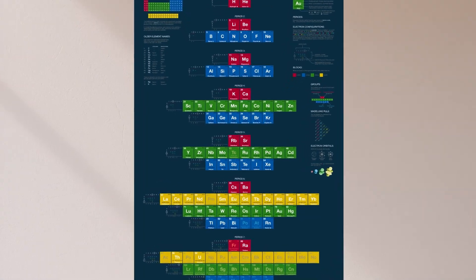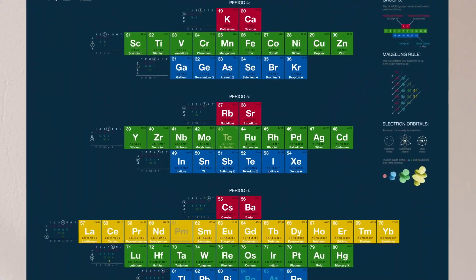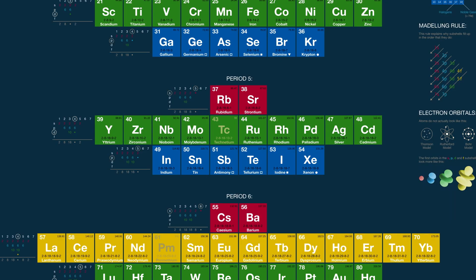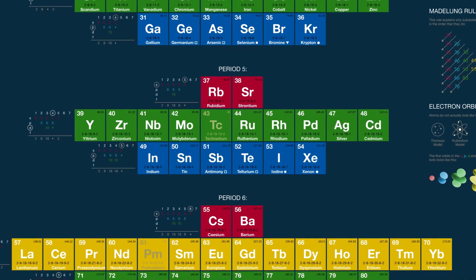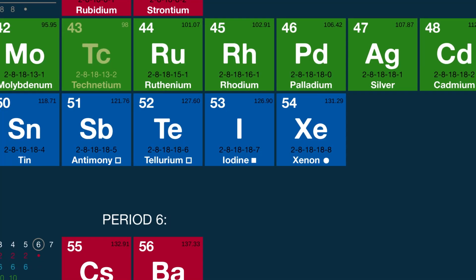If we zoom in, we can see that there's lots of other information listed. For each element, you have its name, number, and symbol, as well as its atomic weight and electron arrangement. Note that man-made elements are shown shaded and the state of matter at standard temperature and pressure is indicated by a symbol next to the name. So, for example, the white square next to iodine means that it is a non-metallic solid, whereas the circle next to xenon means that it is a gas.